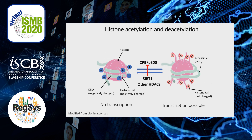Just as a short reminder, histone acetylation is modulated by histone acetyltransferases, or HATs, and histone deacetylases, HDACs. p300 and sirtuins are just two examples, and the reason I mention them here is because I'm going to talk about them later. The key thing to remember from this slide is that the activity of p300 is inhibited by the activity of sirtuins.